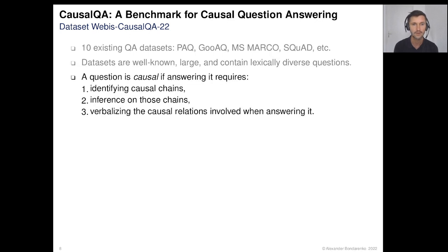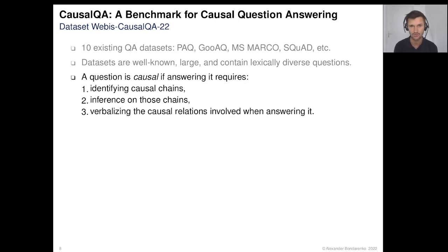Based on related literature, we defined a causal question as a question where answering it requires three criteria. First, the causal chains should be identified. Second, inference in those chains should be performed. And finally, the causal relations involved in answering should be verbalized.